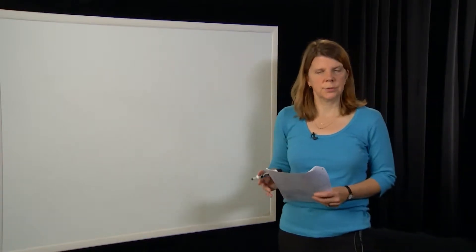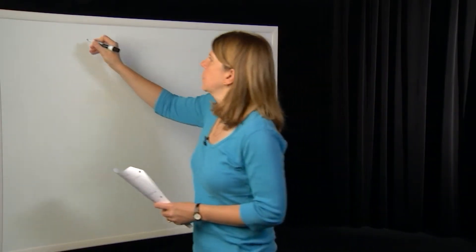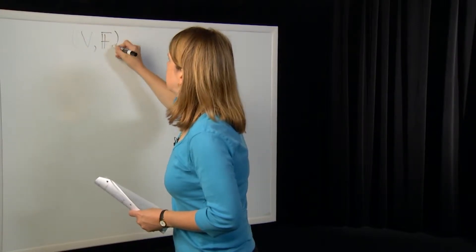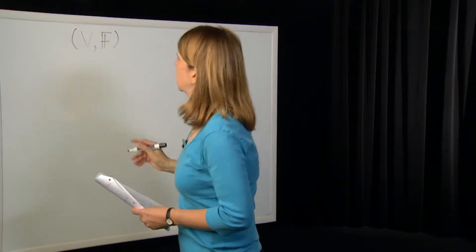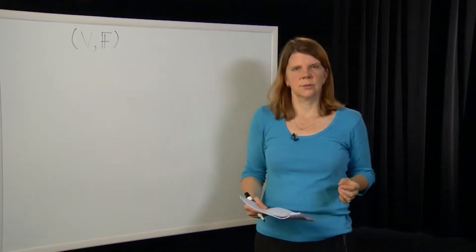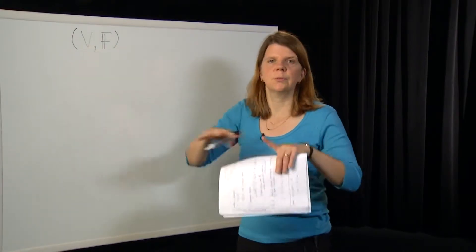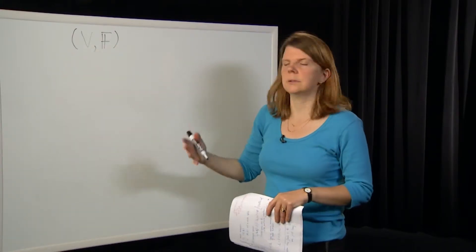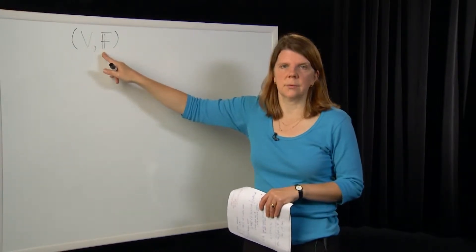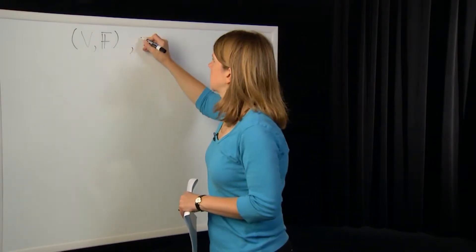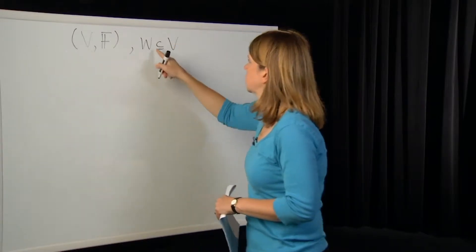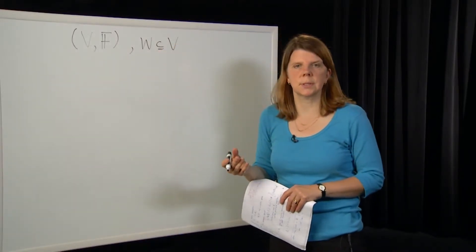We'll start with the notation introduced last time: a vector space V over an associated field F. Let V be a vector space, and suppose we consider a subset of V. Remember, V is a set of elements with vector addition and scalar multiplication alongside the field F. Let W be a subset of V — it could equal V, but in general it's probably a proper subset.